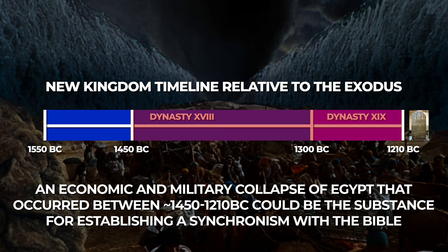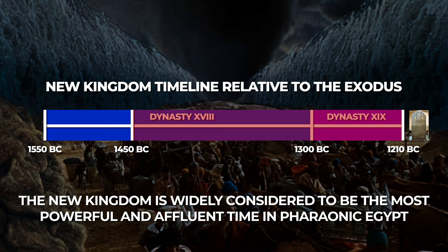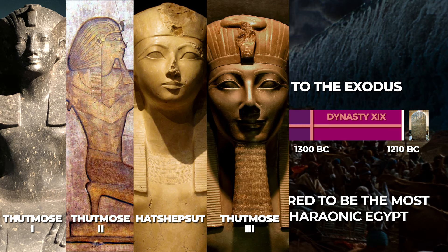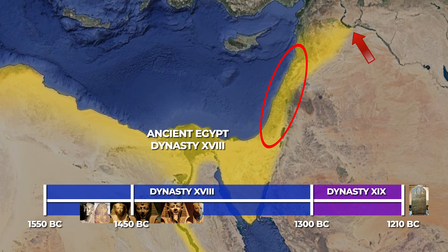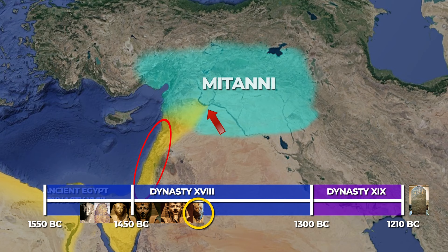At this point, though, we run into a bit of a hurdle. The New Kingdom is widely considered to be the most powerful and affluent time in Pharaonic Egypt. The 18th Dynasty pharaohs Thutmose I, Thutmose II, Hatshepsut, Thutmose III, Amenhotep II, and Thutmose IV were able to expand Egyptian hegemony up through Canaan and Syria, even as far as the Euphrates River in Mesopotamia. These territorial gains were fixed with a treaty between Thutmose IV and Artatama I, the king of Egypt's rival state at this time, the Kingdom of the Mitanni. This territorial expansion was unprecedented and was only possible due to the strength and wealth of Egypt during the 18th Dynasty.